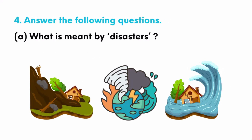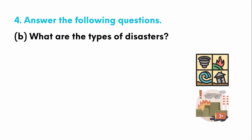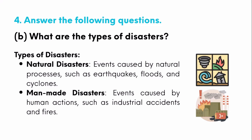The fourth question asks us to answer the following. First: what is meant by a disaster? A sudden event that causes large-scale damage to life, property, and social aspects of a nation or society is called a disaster. There are two types of disasters: natural disasters, which are events caused by natural processes such as earthquakes, floods, and cyclones; and manmade disasters, which are events caused by human actions such as industrial accidents and fires.